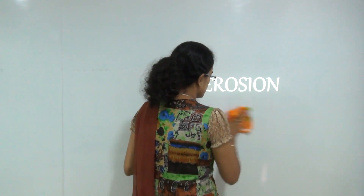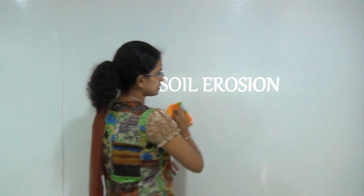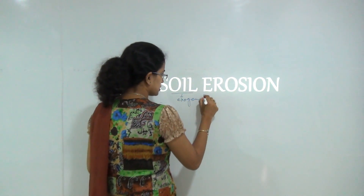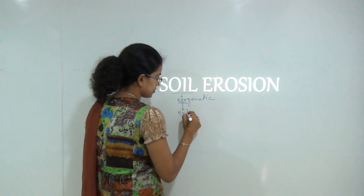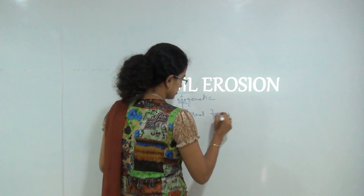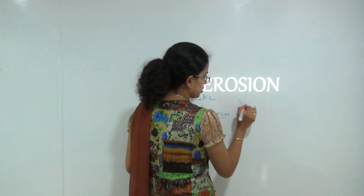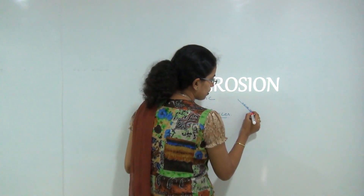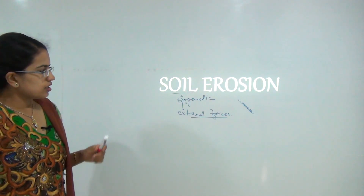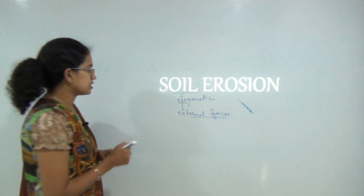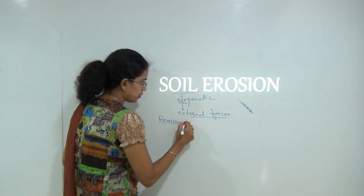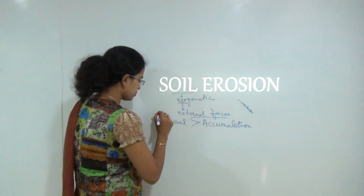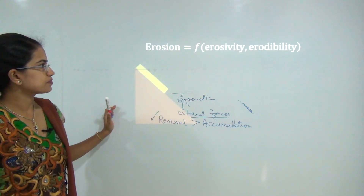So what is soil erosion? Whenever there is loosening of the rock or the soil strata, it is known as soil erosion. This can be caused due to any exogenetic force — 'exo' meaning external — so any external force that causes loosening of the rock. The rock would roll down the slope, and this loosening is known as soil erosion. Whenever soil erosion is occurring, we can say removal of the soil is more than the accumulation of the soil.